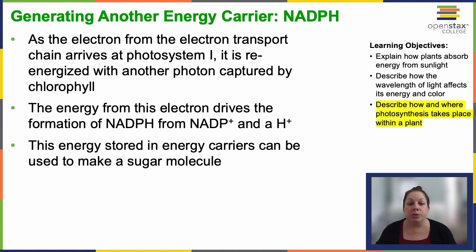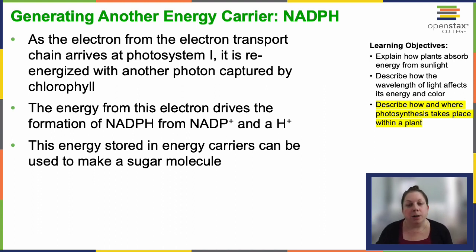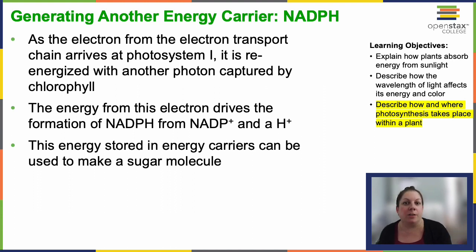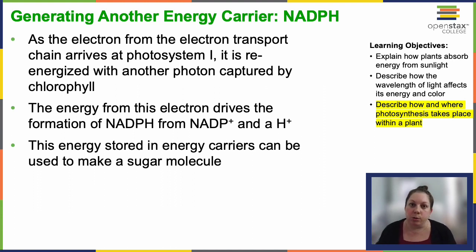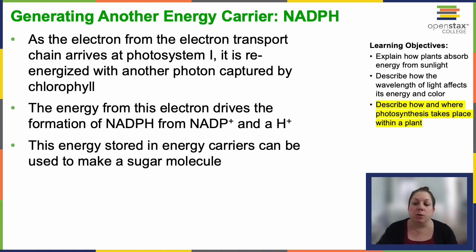The final task of the light dependent reaction is to produce the second energy carrier molecule. We've seen how we make ATP — now we need to look at how we make NADPH. When the electron from the electron transport chain reaches photosystem one, we've pulled all the energy out of it that we could. Now it moves into photosystem one and gets re-energized by another photon, which is absorbed by the chlorophyll pigment and re-excites that electron. That electron can then be used to create NADPH from NADP+ and a hydrogen ion coming together. Solar energy has now stored that energy in these special carriers, and now it's available to be used in the Calvin cycle.